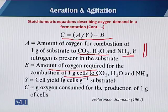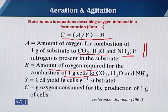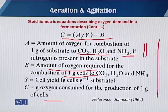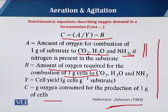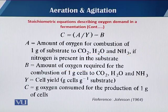Y is the cell yield — how much biomass will be produced — and C is the grams of oxygen consumed for the production of 1 gram of cells. This equation is reported by Johansson, in which he shows the relationship of these three parameters with respect to the oxygen requirement.